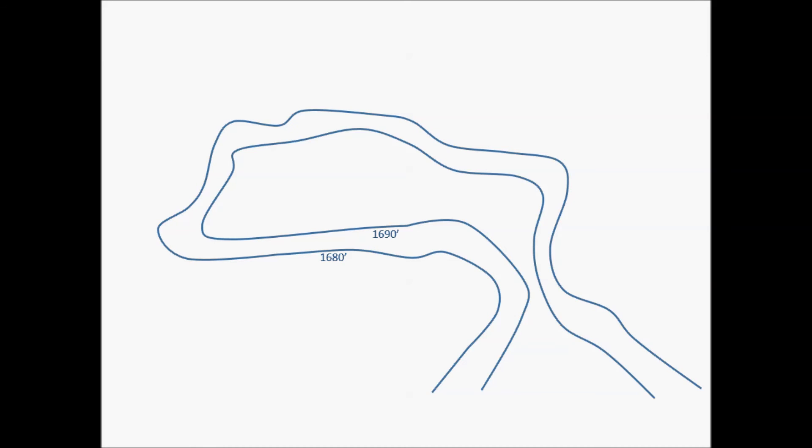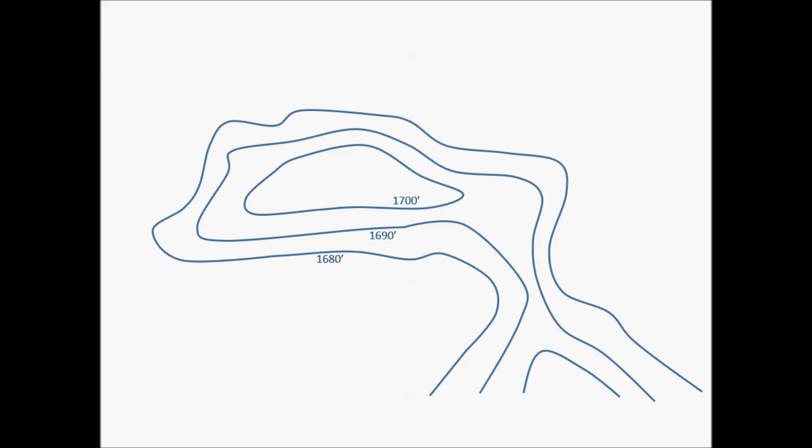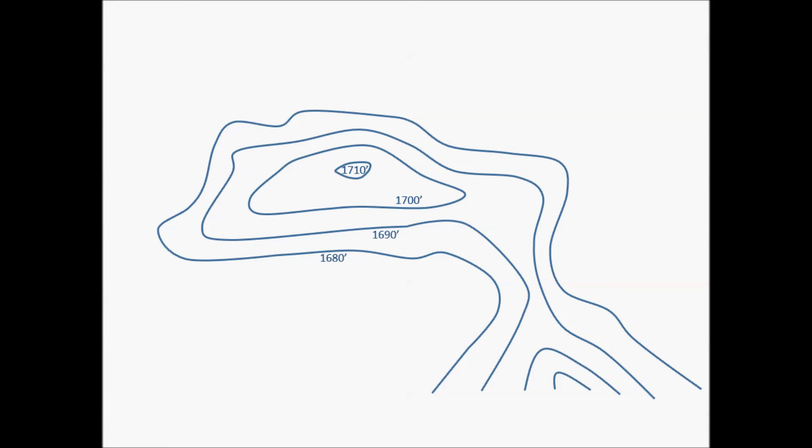We'll start with the elevation of the land around the edge of the water at 1,680 feet. The next line is 10 feet above the first one, which connects all the points with an elevation of 1,690 feet. The next line is our 1,700 foot contour line. And finally, we add our maximum contour line of 1,710 feet.